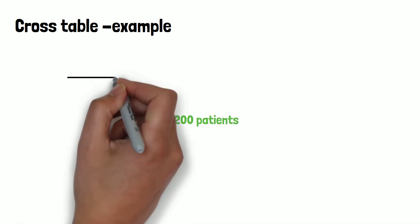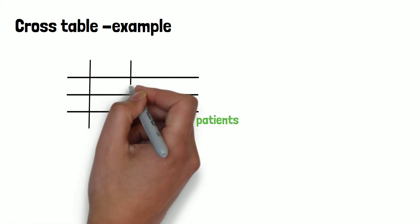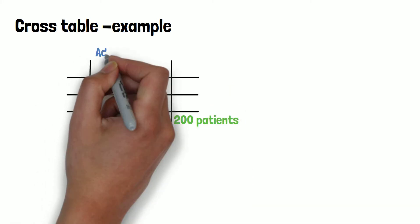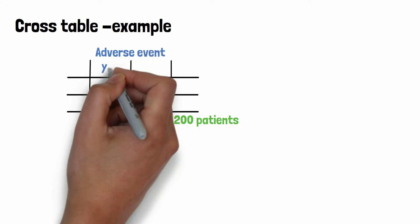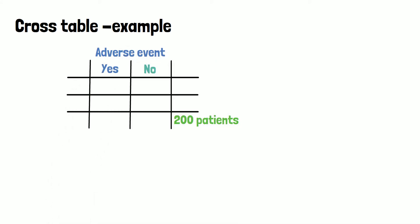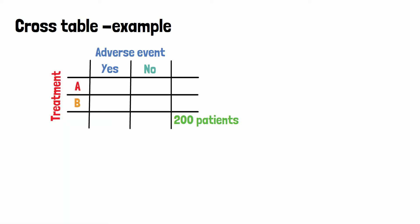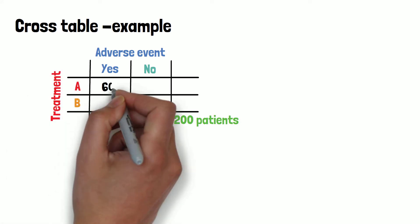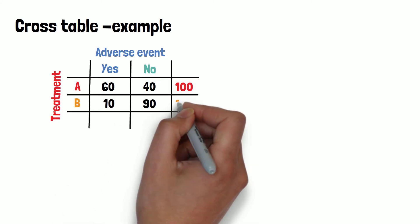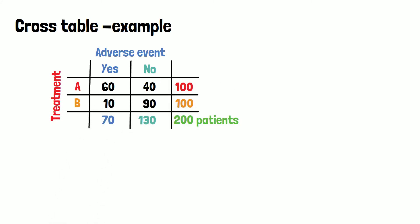Let's take an example. We conduct a clinical trial with 200 patients and want to analyze the distribution of occurrence of adverse events into treatment arms. Therefore, we can separate the patients according to their outcome, whether an adverse event occurred or not, into two columns. In the rows we then distinguish the two treatment arms. If we had another treatment arm here, we could just add another row. The dimension of a cross table is expandable depending on the classification of the used variables. This table allows anyone looking at it to see at a glance how the adverse events are distributed.